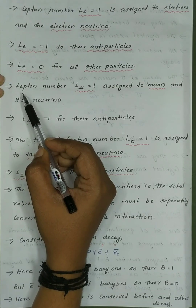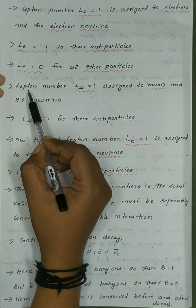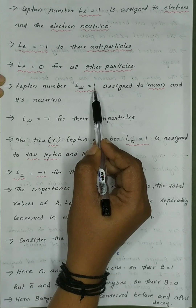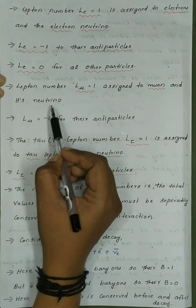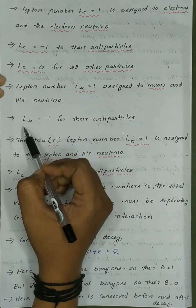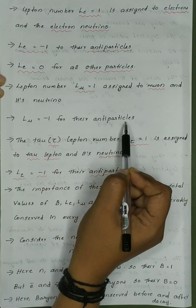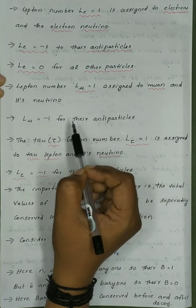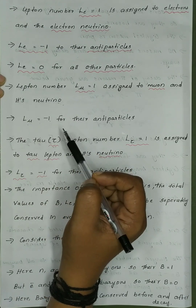We now assign the Lepton number to the second family. The Lepton number L_mu equal to 1 is assigned to the muon and its neutrino. L_mu equal to minus 1 is assigned to their antiparticles, and all other particles have L_mu equal to 0.